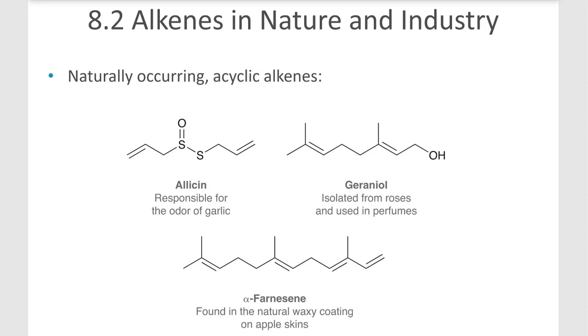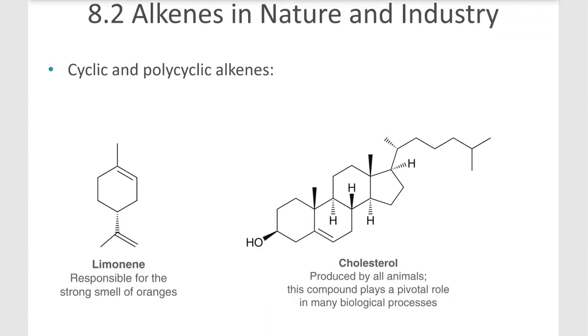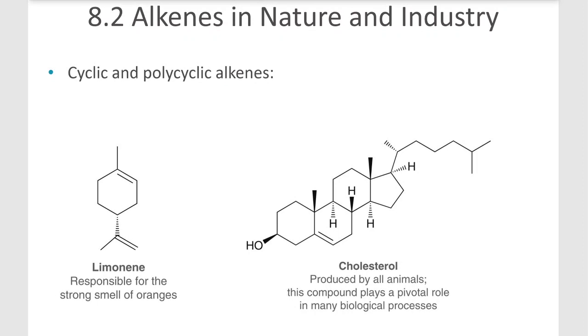But let's just take a minute to discuss how alkenes are important in nature and in industry. So alkenes are found in natural products and they're also used in the production of industrial products. We have allicin here that's responsible for the odor of garlic. Geraniol that's isolated from roses and used in perfumes. Alpha-pharnicine that's found in the waxy coating of apple skins. And then we have some natural polycyclic alkenes or just cyclic alkenes like limonene here on the left and cholesterol on the right.